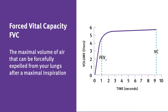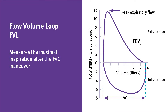Forced vital capacity, or FVC, is the maximal volume of air that can be forcefully expelled from your lungs after a maximal inspiration. A flow volume loop, or FVL, measures the maximal inspiration after the FVC maneuver.